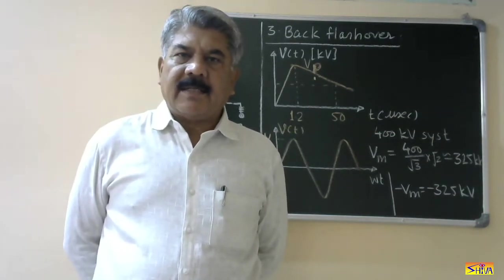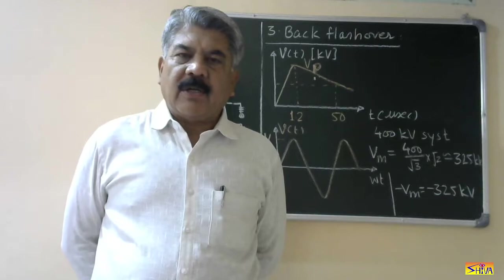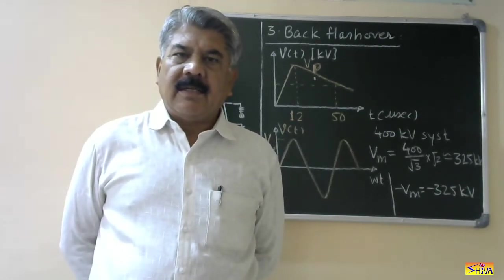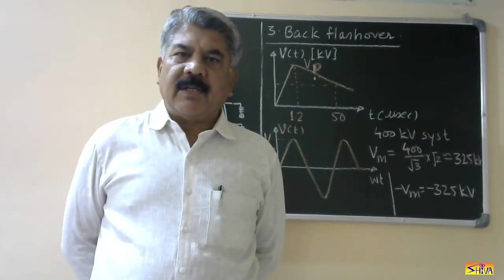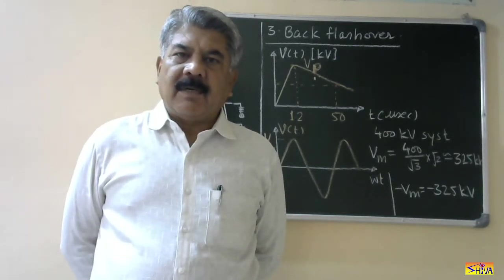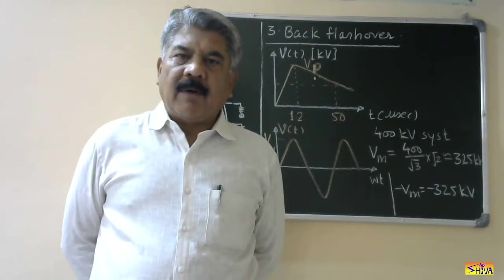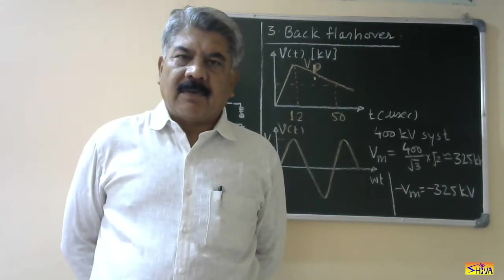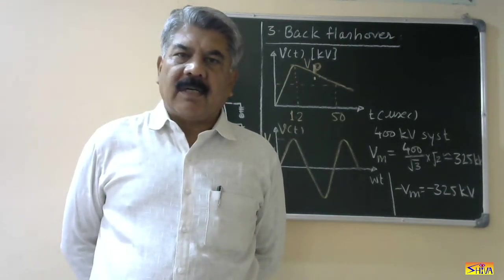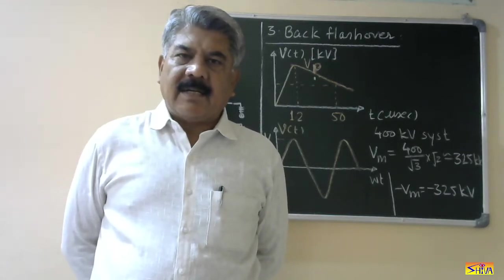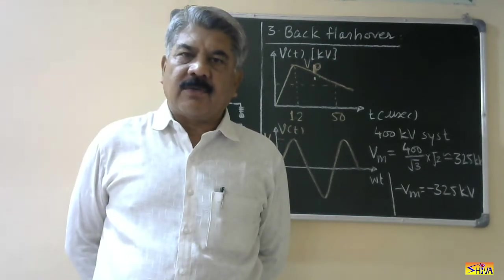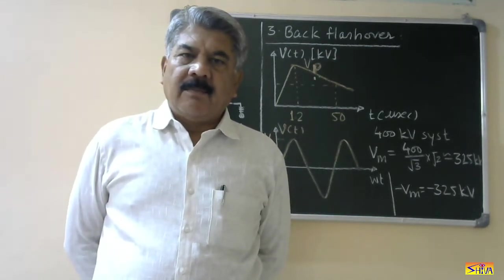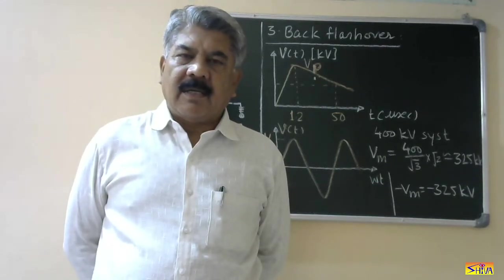In my last lecture I had started with the protection of transmission line and distribution line against direct lightning strokes. In that lecture I had told you that the protection is provided by ground conductors also called as earth conductors. These are nothing but the conductors running above the power conductors and connected to the towers. As they are above the power conductors they attract the direct lightning strokes.